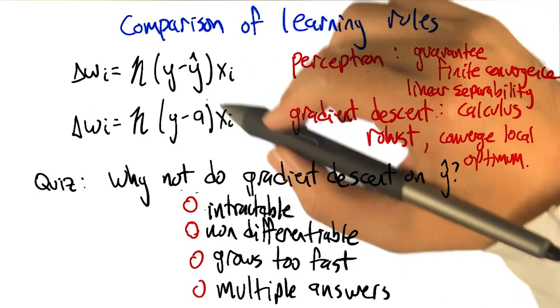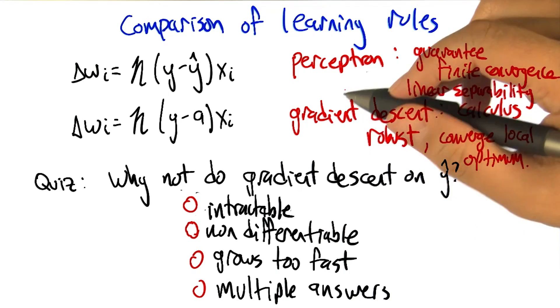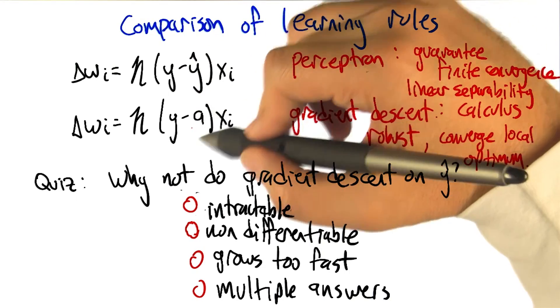So once we see these two things next to each other, it kind of raises the question, why don't we just use a gradient descent type approach on an error metric that's defined in terms of y hat instead of just the activation A.